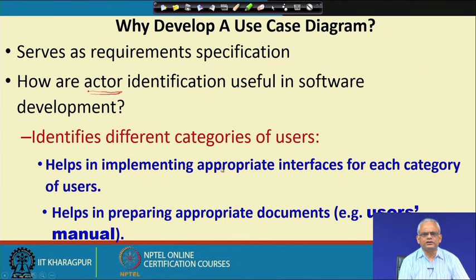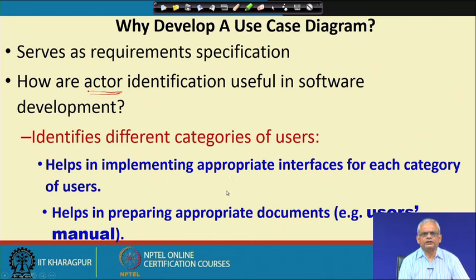The second use of identifying the actors is that it also helps in preparing the user manual. If we can identify who the users are, the user manuals can be developed targeting those users. For example, if factory workers are the users of the software, then the user manual has to be written in very simple, understandable language. But if the software will be used by system administrators and computer experts, then the user manual can assume certain background knowledge and be presented at that level. So identifying the category of users is helpful — first in developing the GUI, and second in preparing the user manuals.